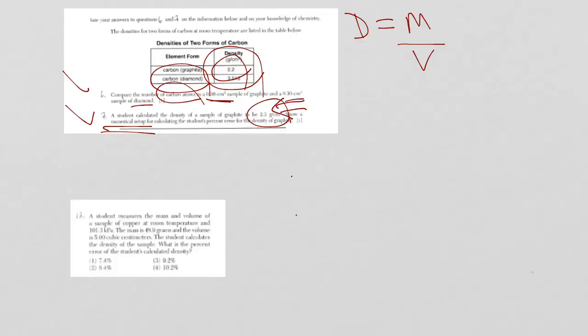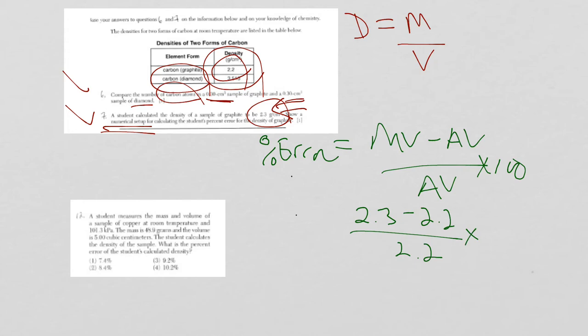When they say numerical setup, they're looking for the numbers. Don't worry about the units. So, what do we have? Percent error. All right, I'm going to follow exactly what it says. Measured value, so MV minus AV divided by AV times 100. Okay, so let's plug it into the equation. The student's value, which is the measured value, is 2.3. Accepted value, 2.2 from the table, divided by 2.2 times 100. Don't forget about that. That's why it's so important to write the equation down. There's your numerical setup. You're done. Move on.